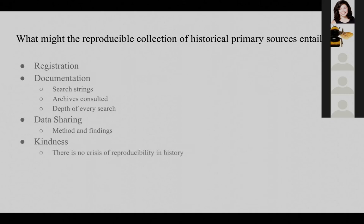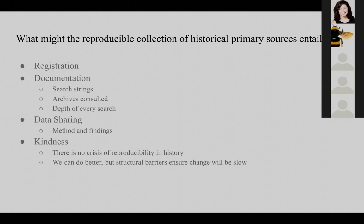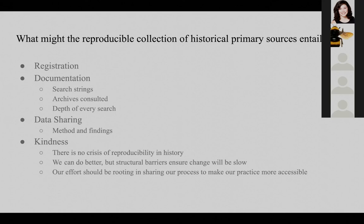There is really no exact crisis of reproducibility in history — I don't think the field is in a troubled spot — but I do think the fact that we're not being as reproducible in this aspect of our work as we could be is really problematic. There are structural barriers to accelerating this change. Not many people in the field are thinking about it, and they're not educated to the extent they'd need to be to introduce it in methodology courses — and I think librarians can really help there. Our efforts should be rooted in sharing our process to make our practice more accessible. The biggest promise of reproducibility in primary source collection is to actually save our students and our colleagues quite a bit of financial and time resources. Thank you.